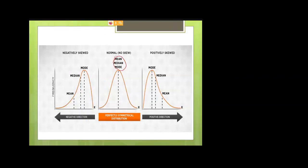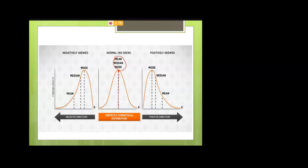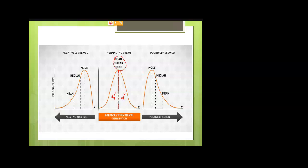The degree of departure from symmetry is called skewness. When mean, median, and mode are at different points, that distribution is skewed. In the normal probability curve, mean equals median equals mode — they all lie at the same center point, giving 50% on each side. This is called the symmetrical property of the normal probability curve.